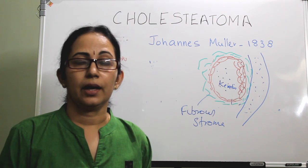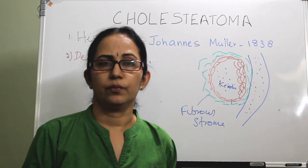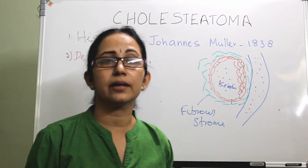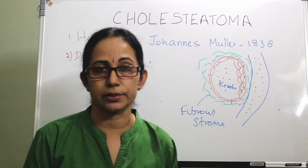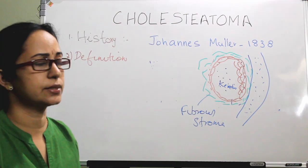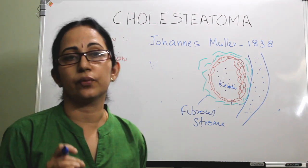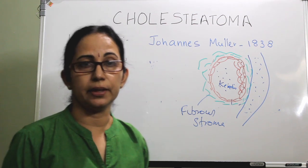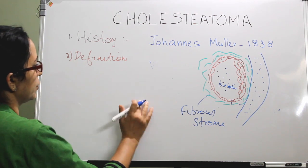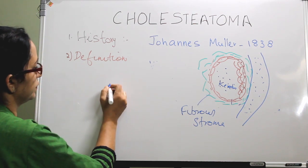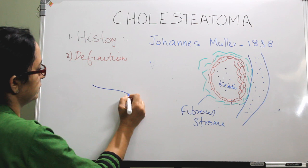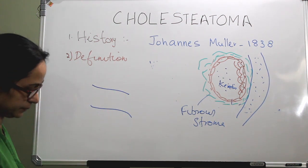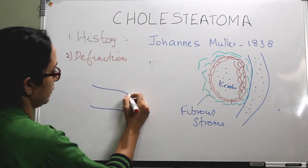Why is cholesteatoma important? What is the lining of the middle ear mucosa? As explained in the anatomy class — this is your external auditory canal, this is your tympanic membrane, and here comes the middle ear.